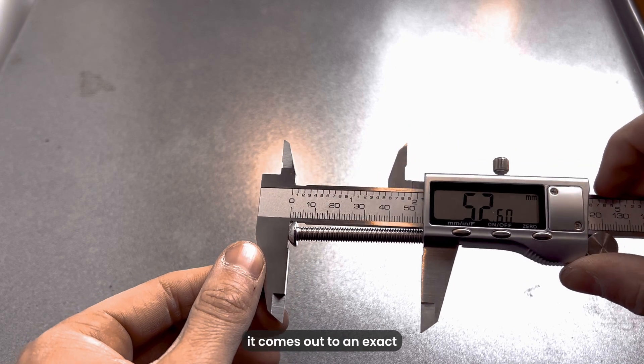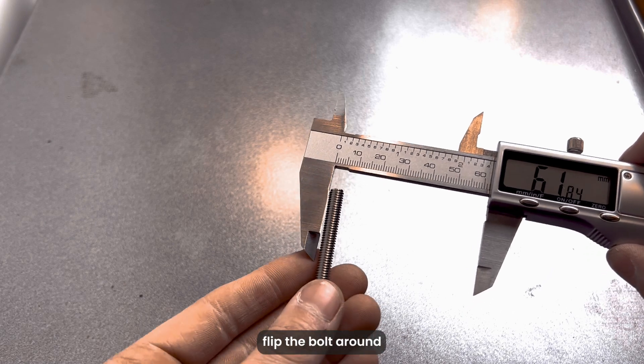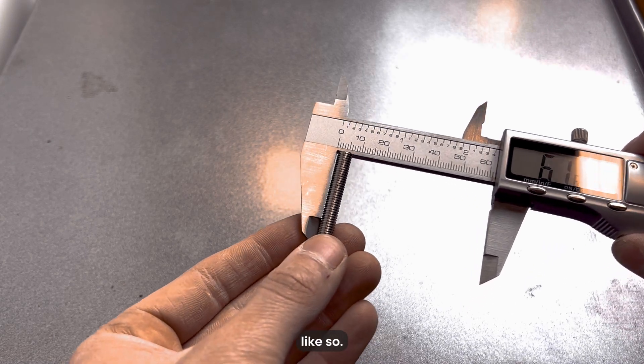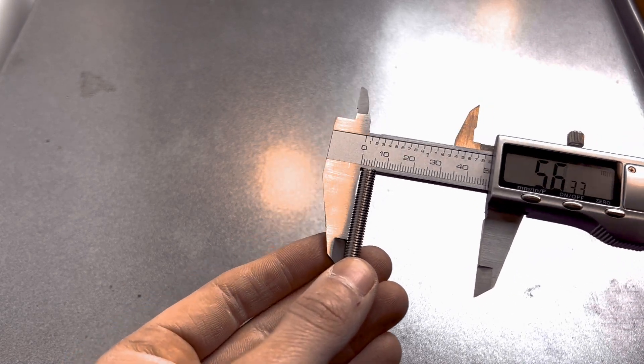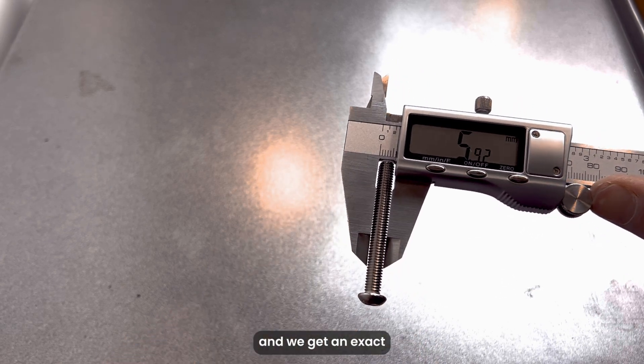In this case it comes out to an exact 52.6 millimeters. For the width, flip the bolt around and close the jaws over it again like so. Take a look at the screen again and we get an exact 5.92 millimeters.